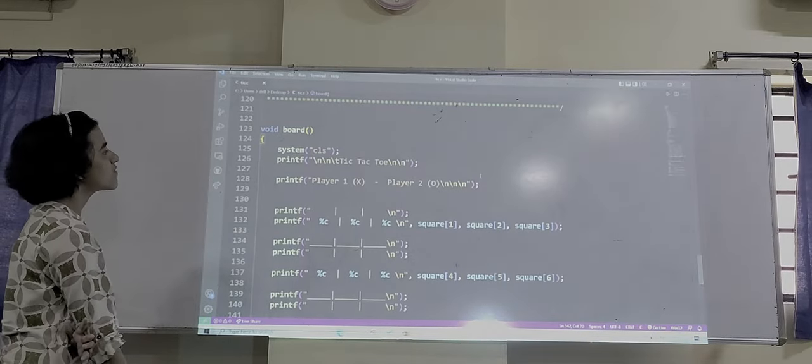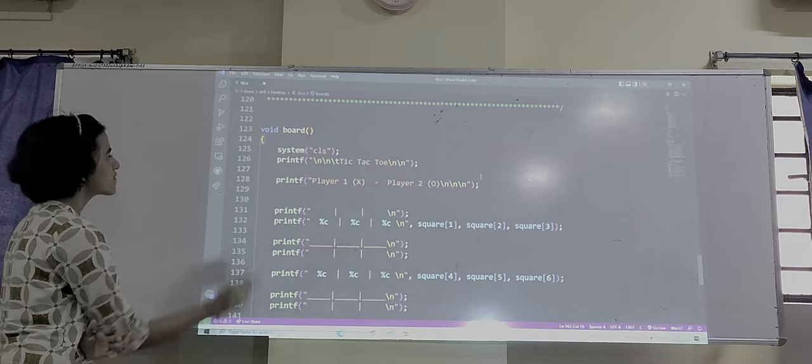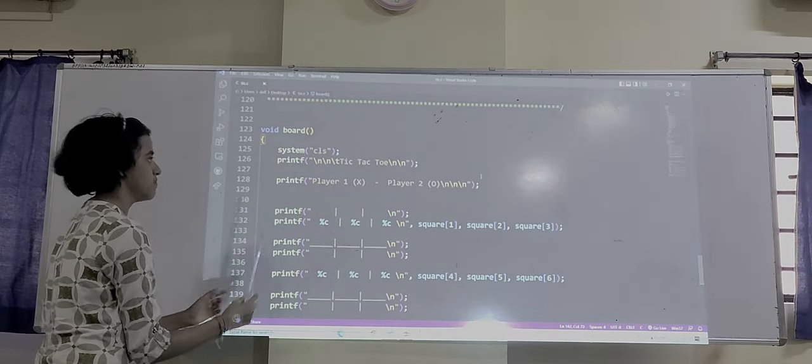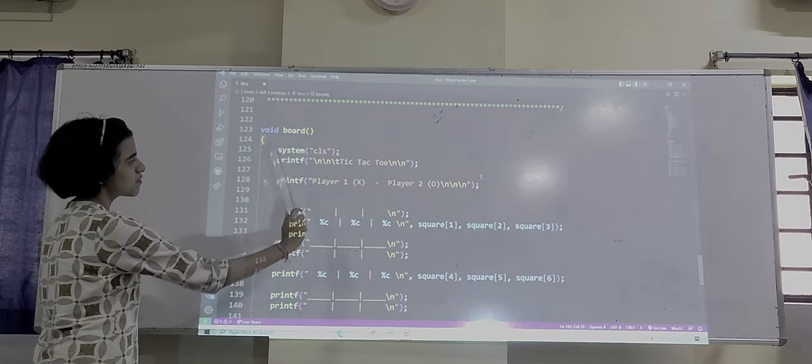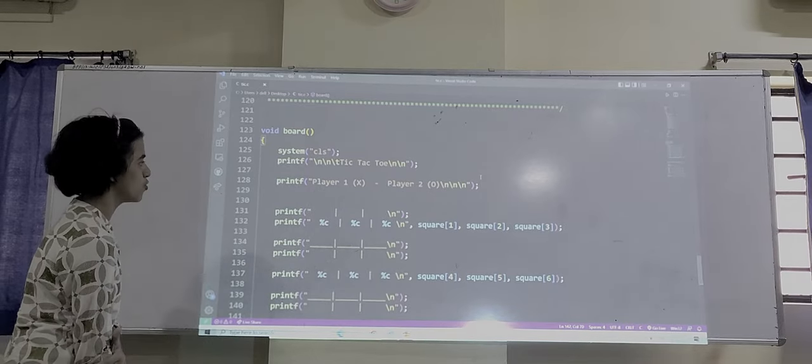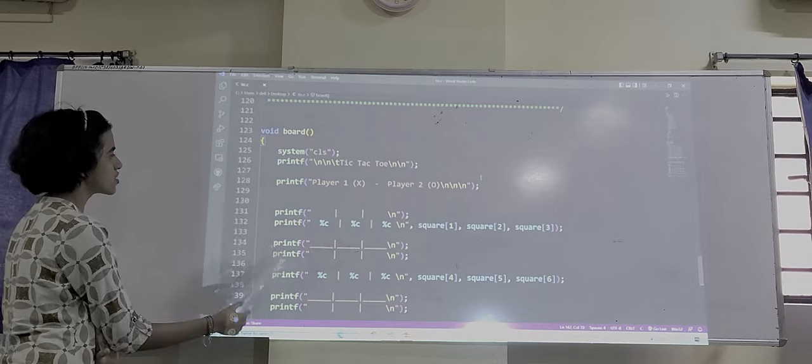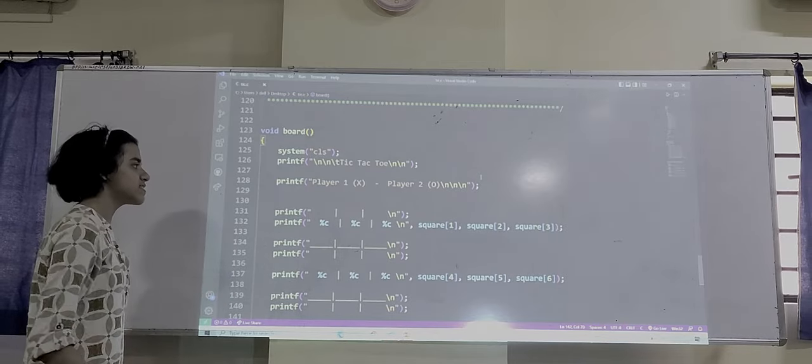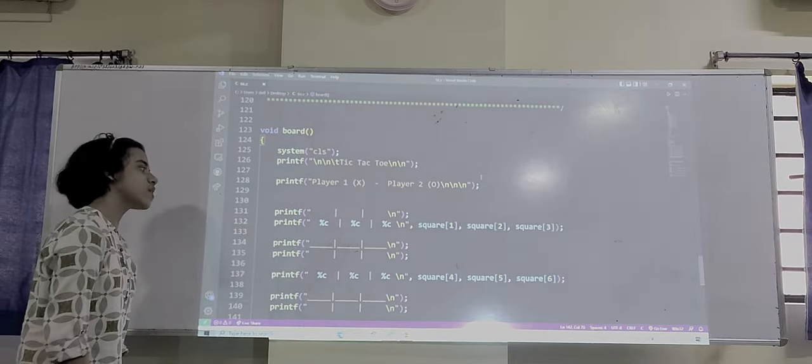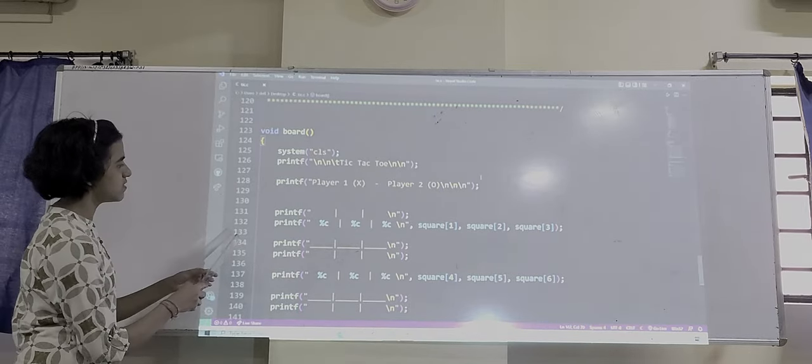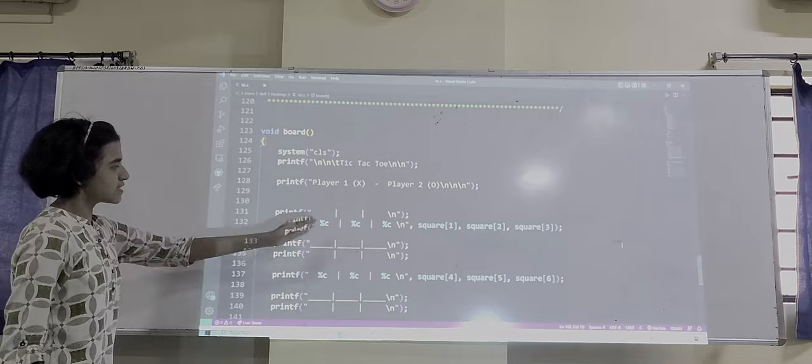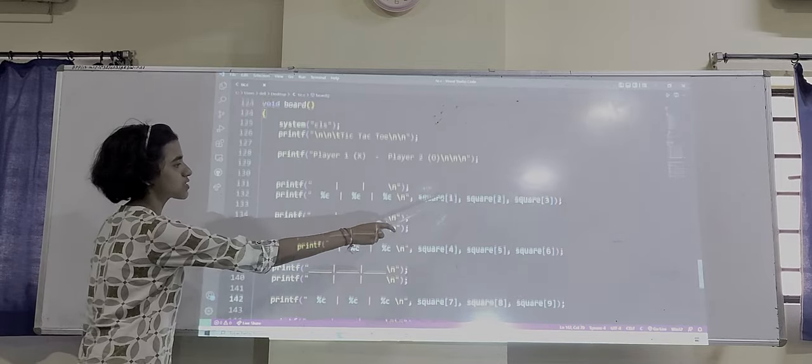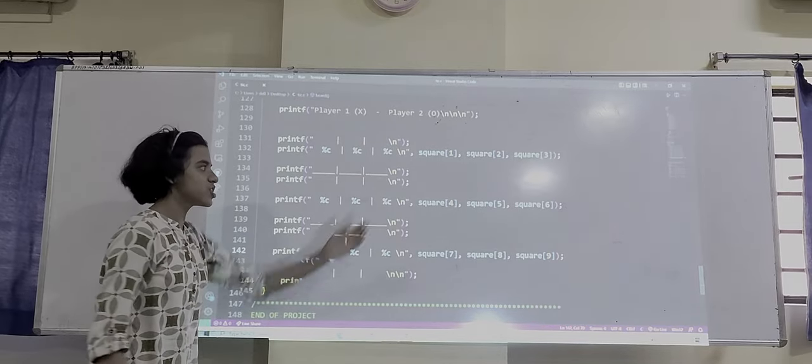First we are taking system CLS, which means clear screen. After that, we have taken the printf function. Printf is in the format whatever we have created. We have written Tic-Tac-Toe, so we will print that. After this we have taken the printf function, where we are printing player 1: X and player 2: O. This means, player 1 will take the mark X and player 2 will take the mark O.